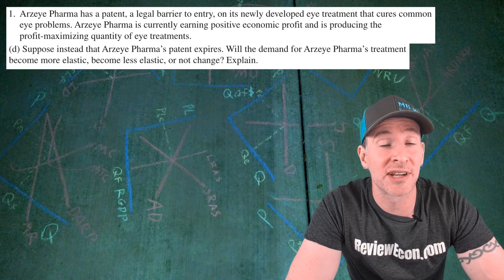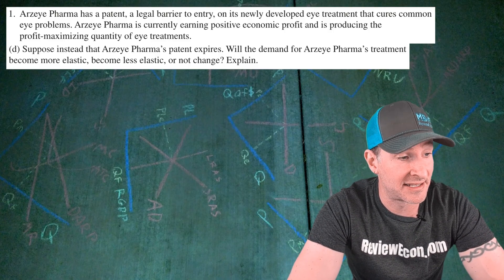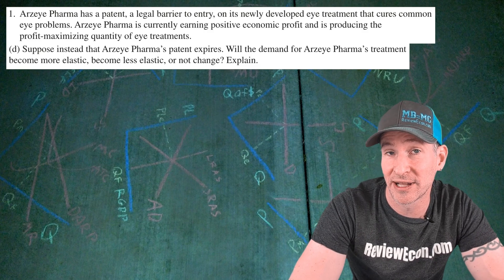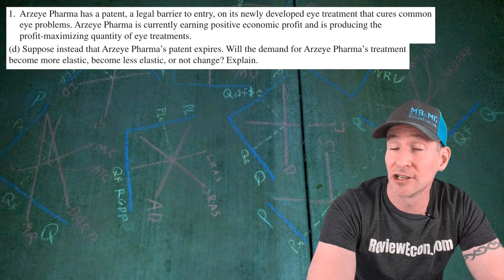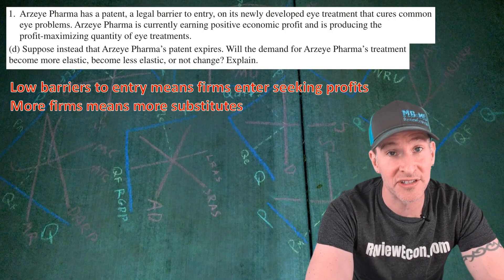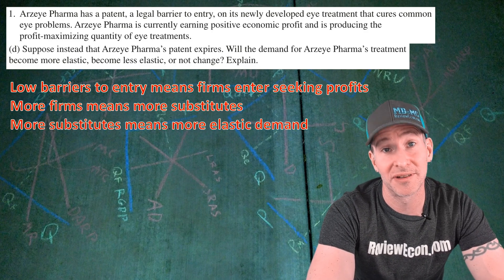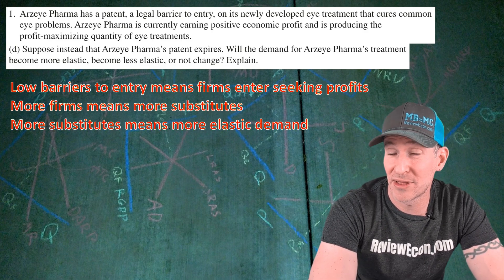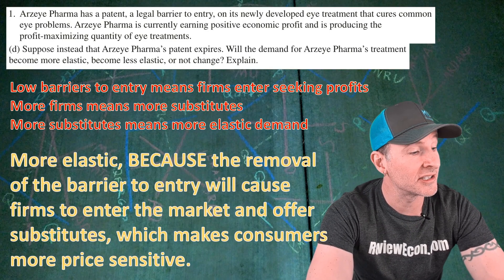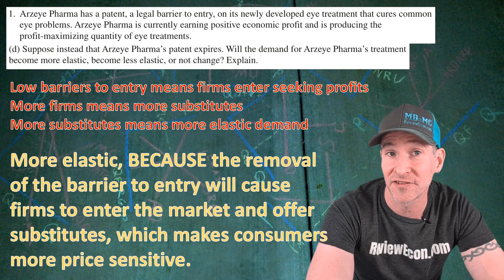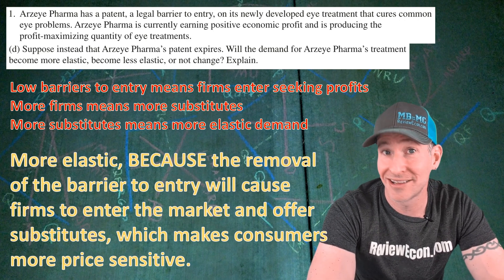For part D, we are told that Arzai's patent expires, and we are asked if demand will become more elastic, less elastic, or not change. The elimination of a patent is a reduction of barriers to entry. Lower barriers to entry means firms can enter when seeking profits, and when firms enter that means more substitutes. More substitutes means more elastic demand. The answer is more elastic, because the removal of the barrier to entry will cause firms to enter the market and offer substitutes, making consumers more price sensitive.